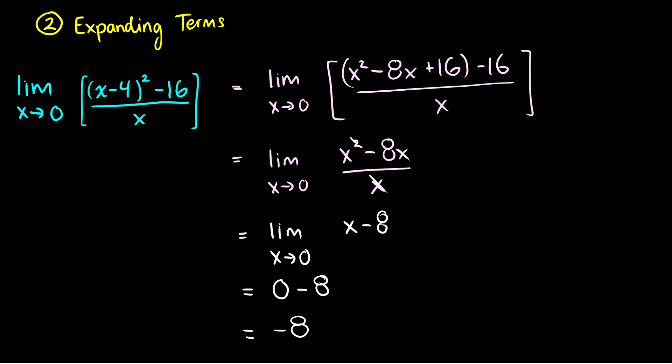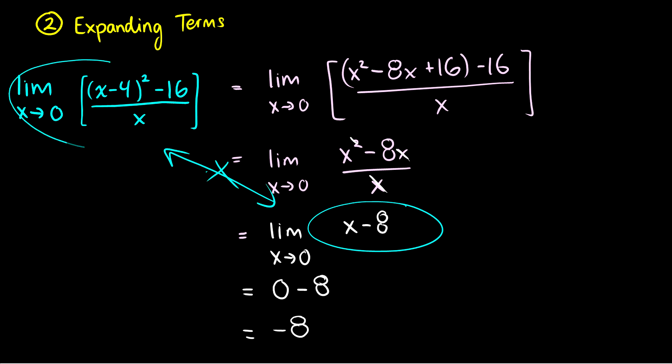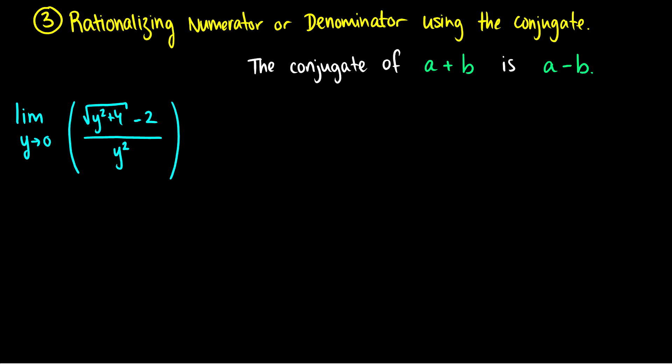So by expanding terms, we were able to cancel out that x on the bottom and find the limit. Again, x minus 8 is not the same as x minus 4 squared minus 16 over x — they're different graphs, they're different functions — but their limits happen to be the same.